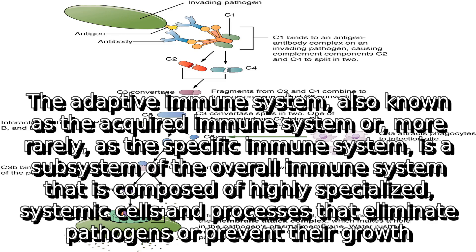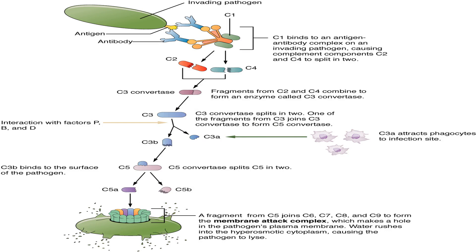The adaptive immune system, also known as the acquired immune system or, more rarely, as the specific immune system, is a subsystem of the overall immune system that is composed of highly specialized systemic cells and processes that eliminate pathogens or prevent their growth.